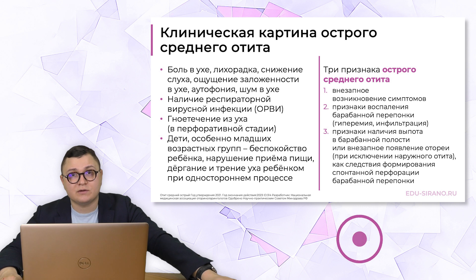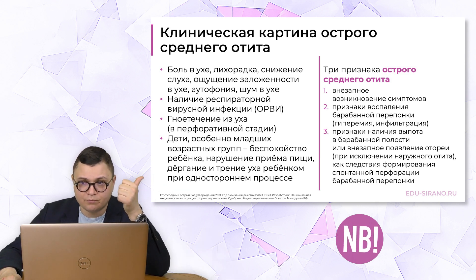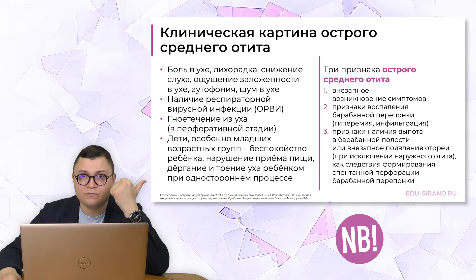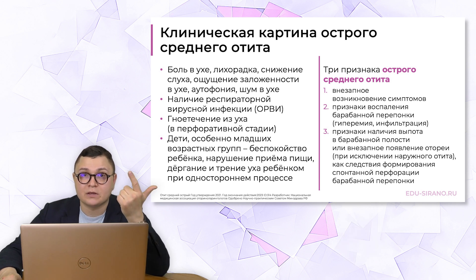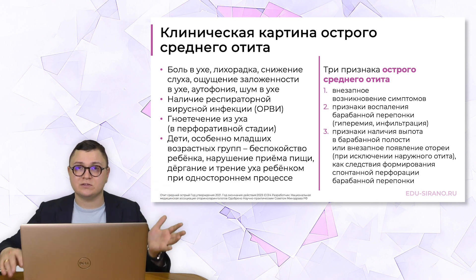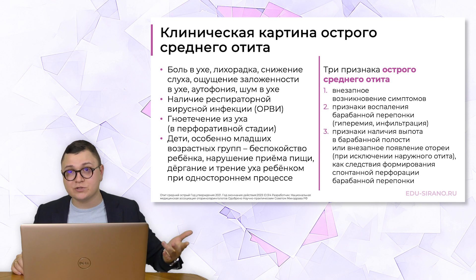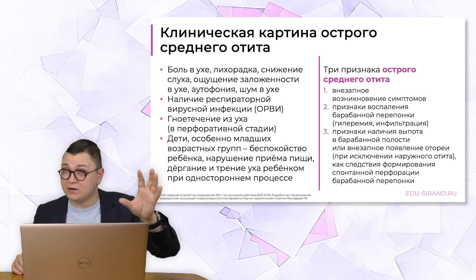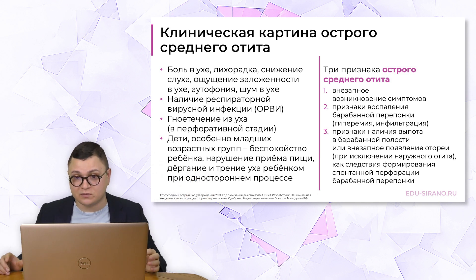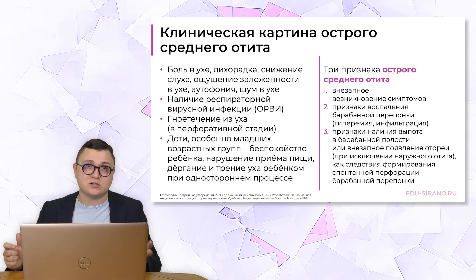Клинические проявления острого среднего отита. Как он отличается от других заболеваний уха? Это боль – сильная боль в ухе, с вовлечением барабанной перепонки: гиперемия, набухание барабанной перепонки, боль в среднем ухе. Если болит ухо и вовлечён наружный слуховой проход – это наружный отит. Если боль в ухе, снижение слуха, мы посмотрели в ухо, вовлечена перепонка – это острый средний отит. Этого достаточно для постановки диагноза. Дальше собираем дополнительную информацию.